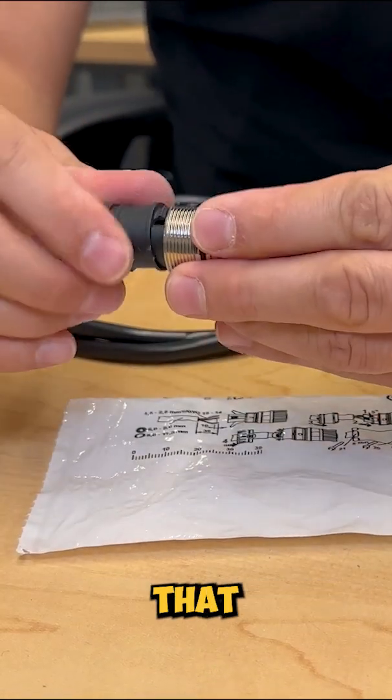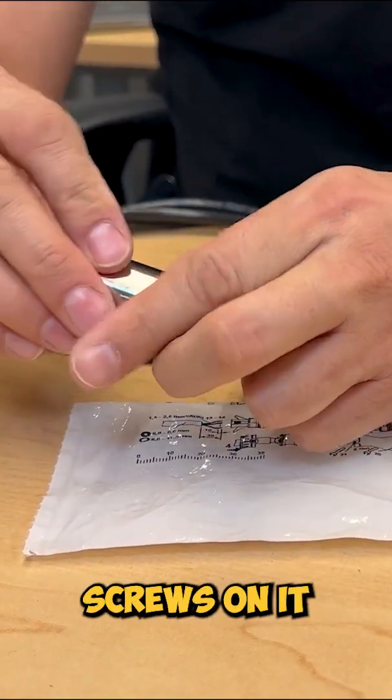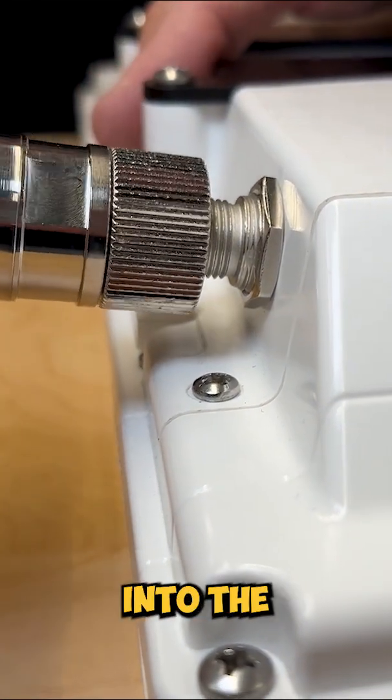That pushes in. That connects in, and then the outer seal screws on. It creates a waterproof connection, and then all you have to do is connect that into the sensor.